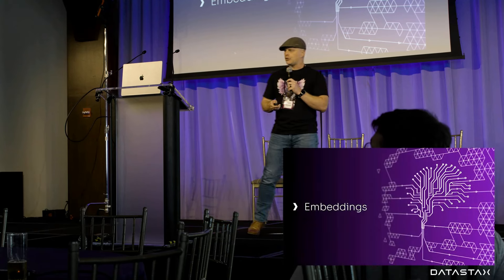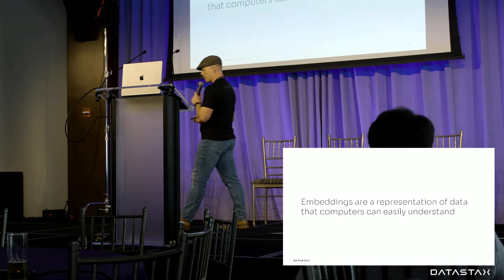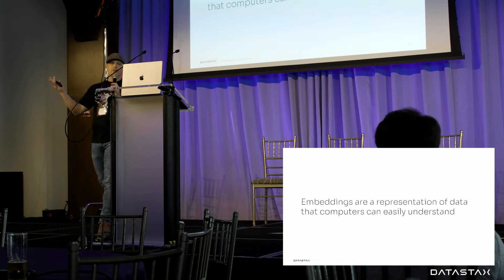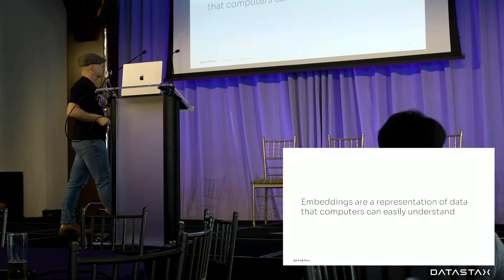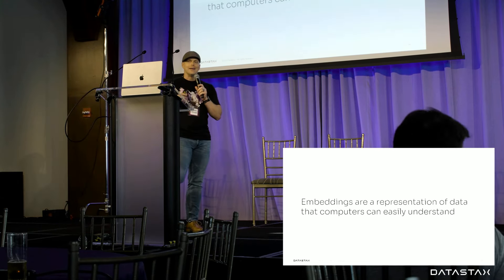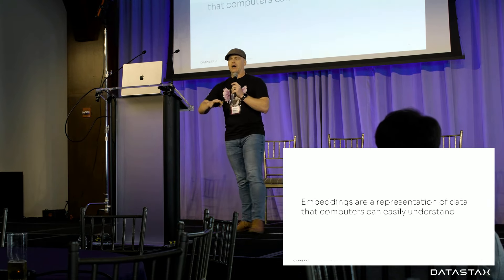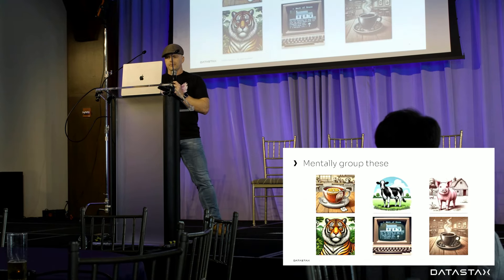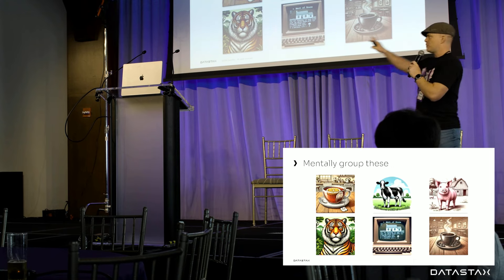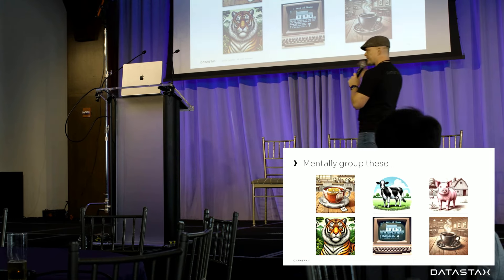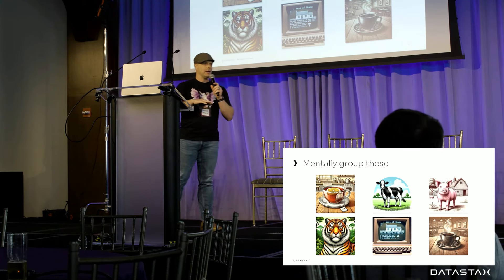I mentioned that we are going to get into vector embeddings — a little primer so we can understand RAG better. What are vector embeddings? They are a representation of data that computers can easily understand. I want everybody to take these images, put them in your mind, and mentally group them however you want.